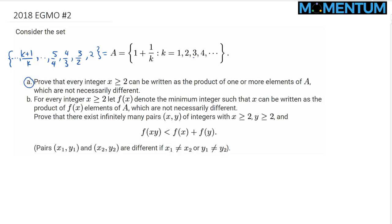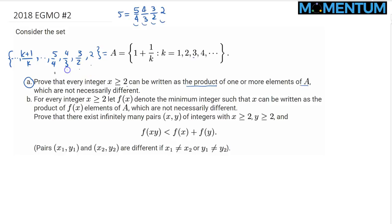For the first part, we would like to prove that every positive integer greater than or equal to 2 can be written as the product of one or more elements of A, with repetitions allowed. The approach is a straightforward telescoping argument. For instance, 5 equals 5/4 times 4/3 times 3/2 times 2. All these fractions are elements of A, and the 3s and 4s cancel, giving us 5.